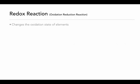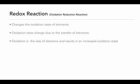So what is a redox reaction? A redox reaction involves a change in the oxidation state of the elements. An element will start off with one oxidation state as a reactant and end with a different oxidation state as a product, due to the transfer of electrons from one atom to another. Oxidation is the loss of electrons — if an atom loses electrons, we say it's oxidized, and it will increase in its oxidation state and become more positive.